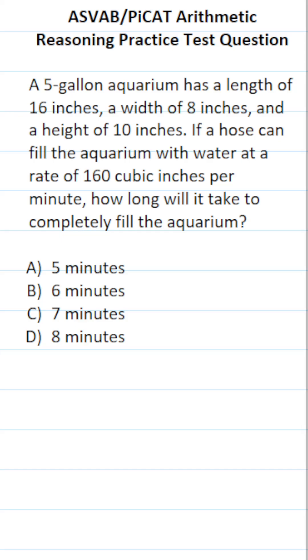So the first thing we have to figure out is the volume of water that's going to be in the aquarium when it's full. And it's a rectangular prism, so its volume is simply going to be length times width times height. On the ASVAB and PiCAT, you're not given a calculator or reference sheet, so you do have to commit some of these basic formulas from geometry to memory. Well, according to this problem, the aquarium has a length of 16, a width of 8, and a height of 10.